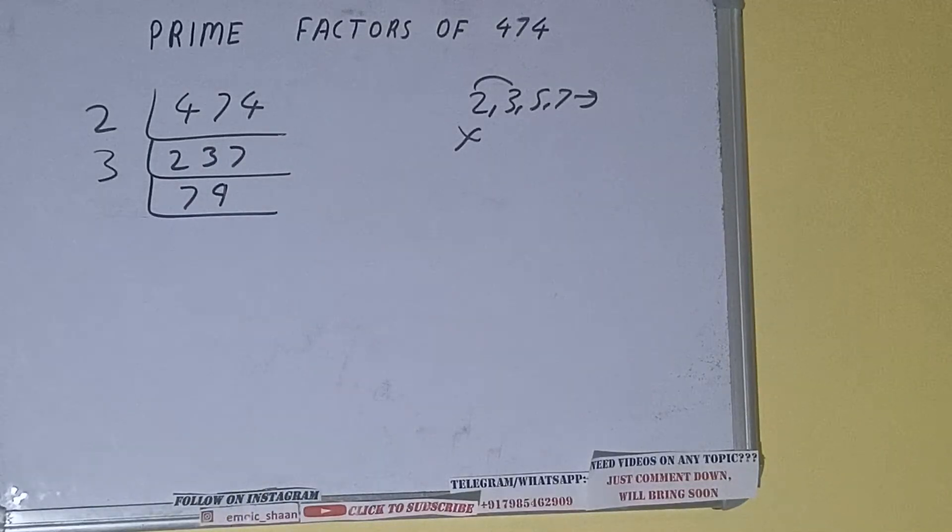We'll be having 79, and 79 is further not divisible by 3. And note that 79 is also a prime number.